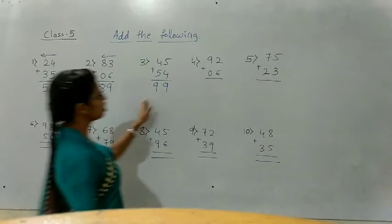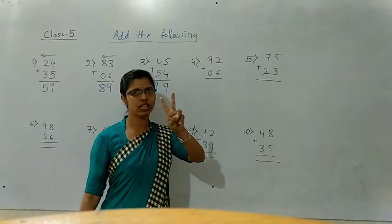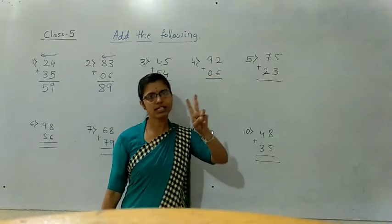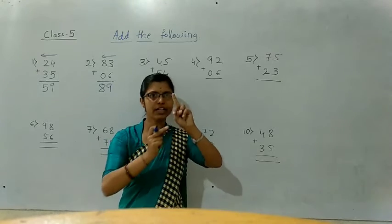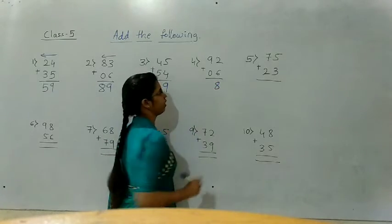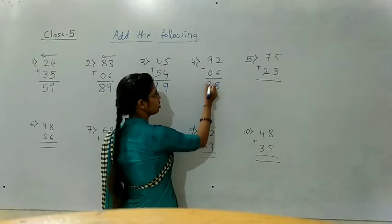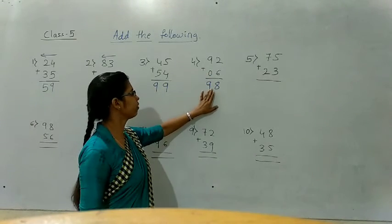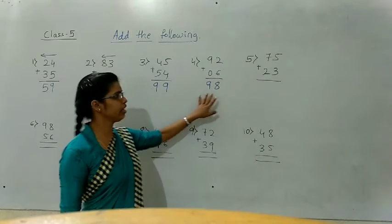See the fourth one. 2 plus 6 — hold 2 fingers. After 6: seven, eight. How much? 8. 9 plus 0 — that is 9. So 92 plus 6 equals 98.